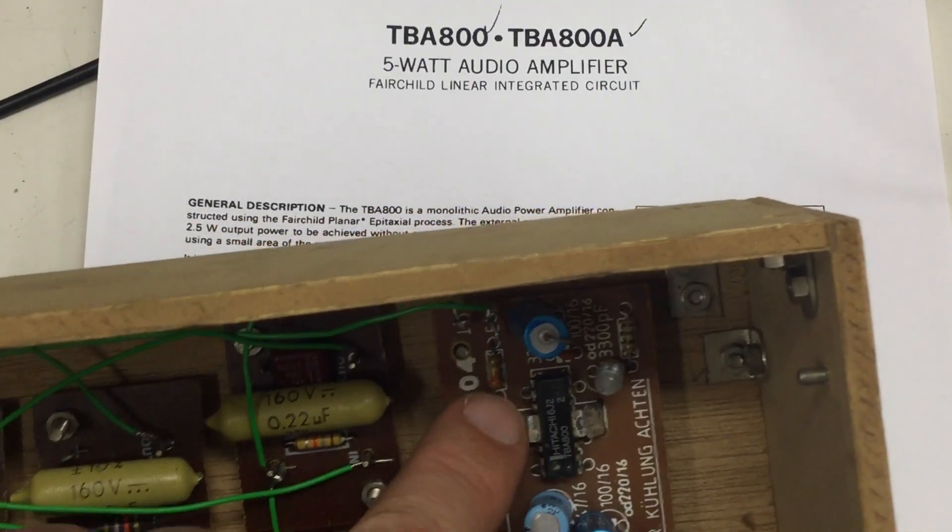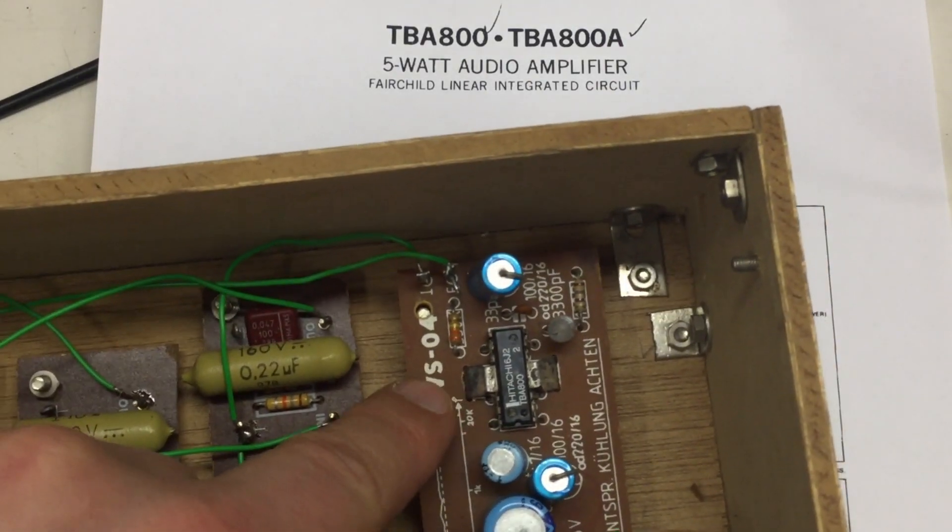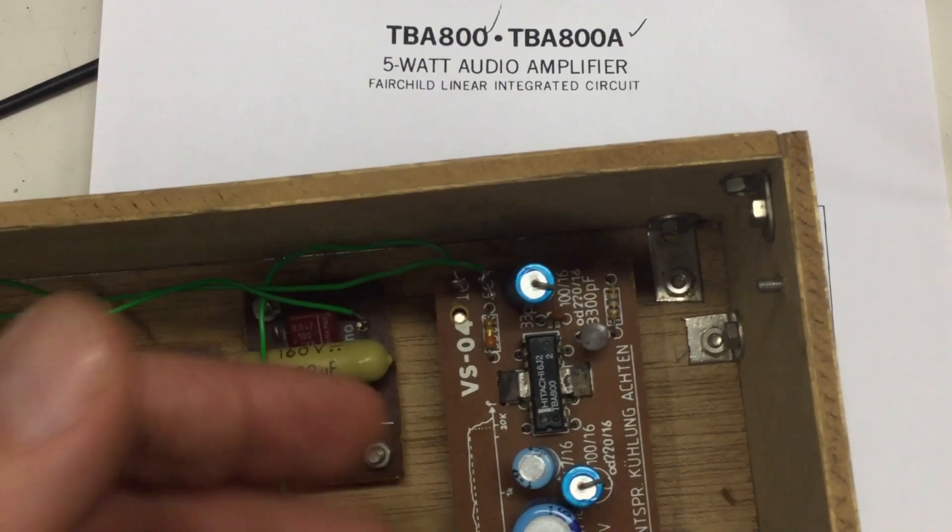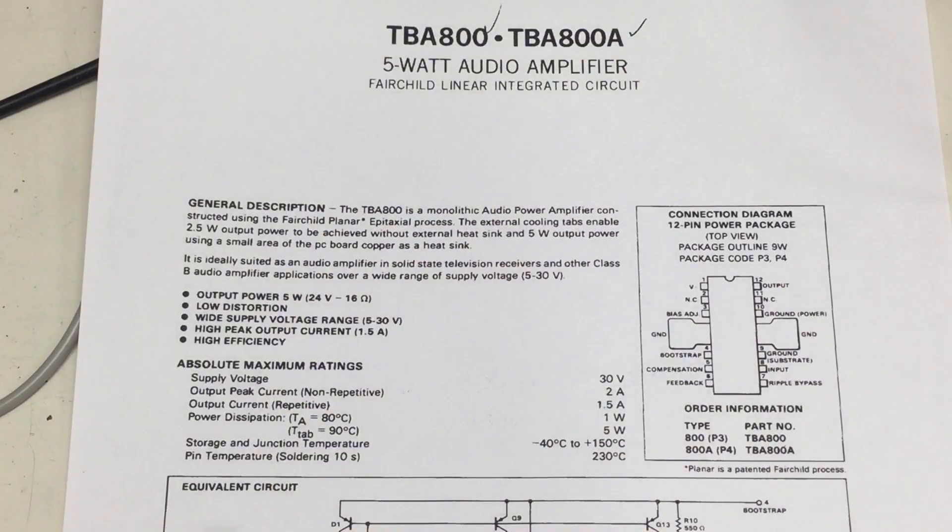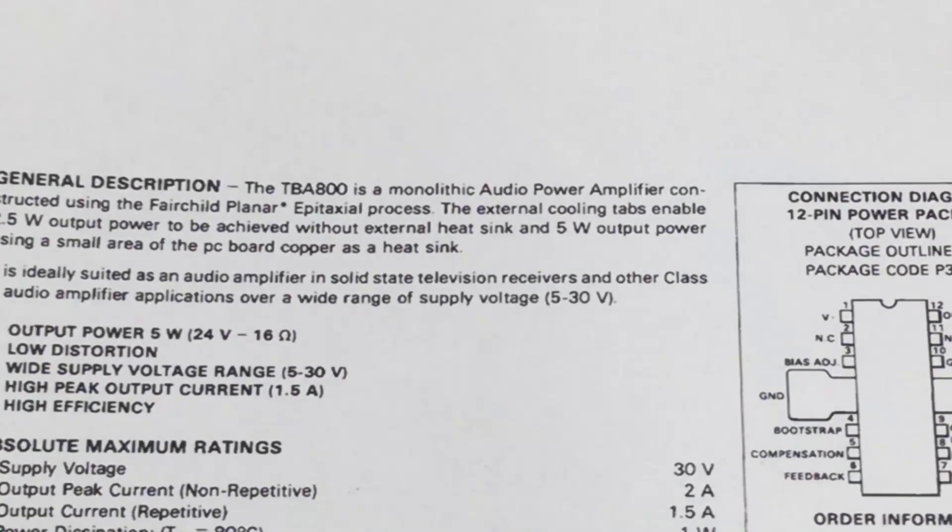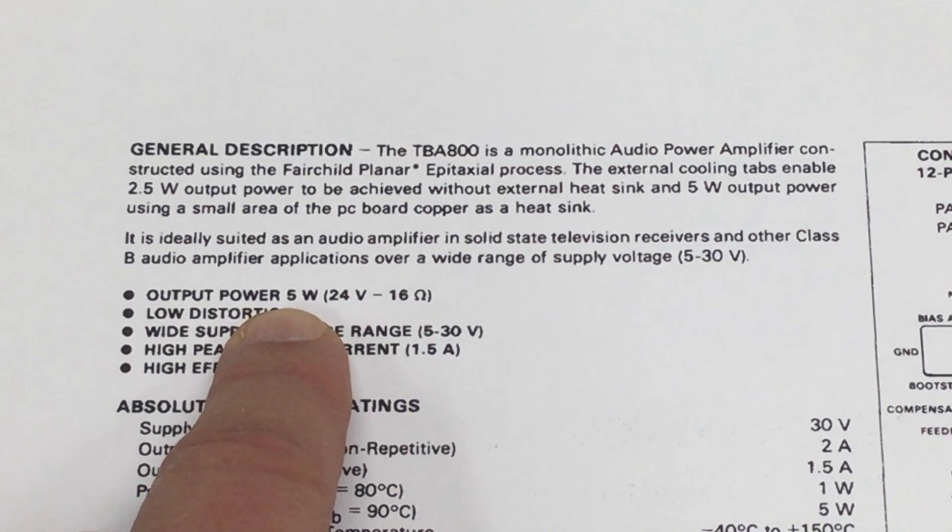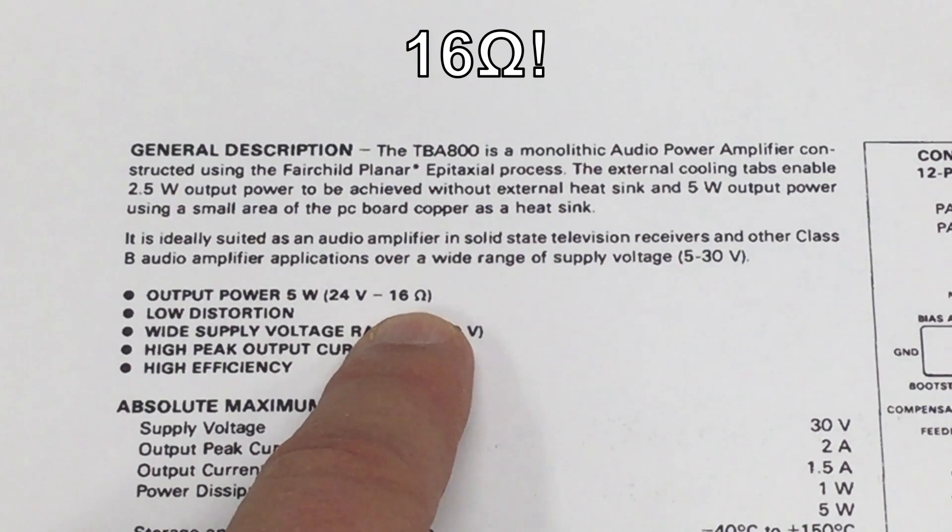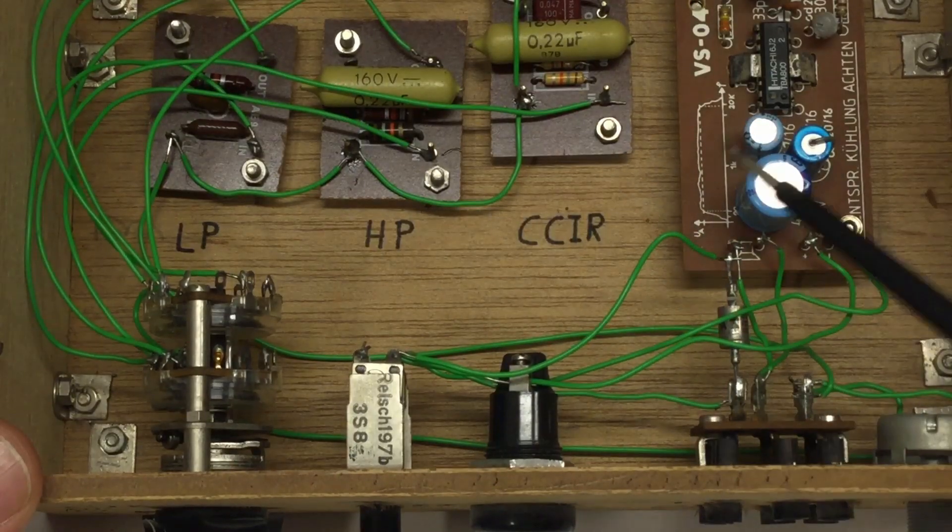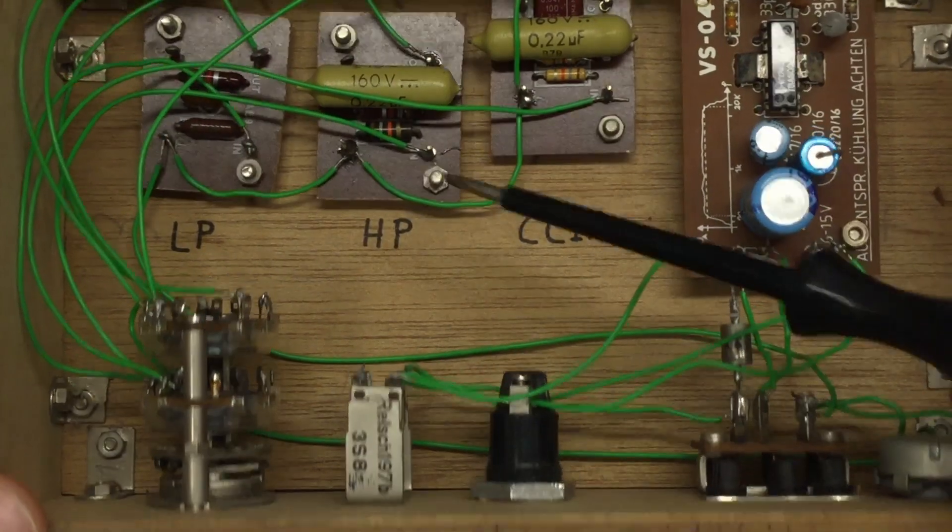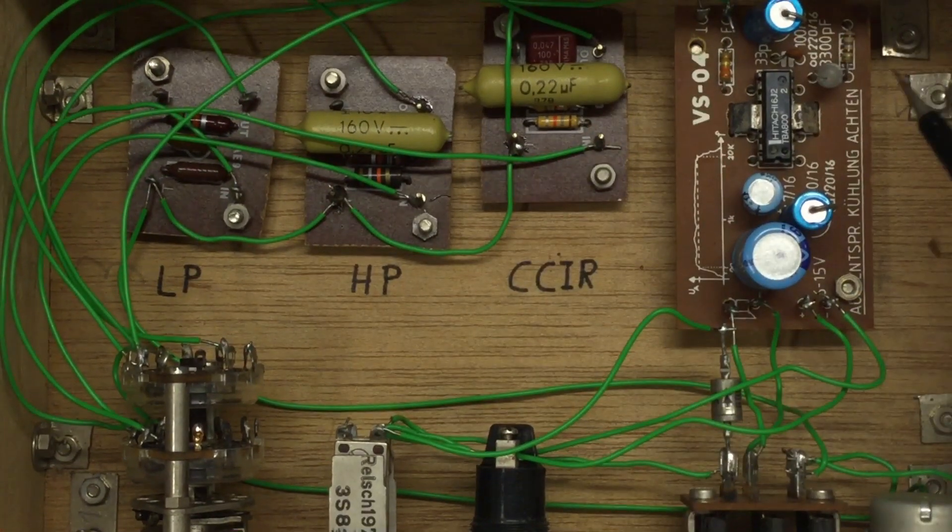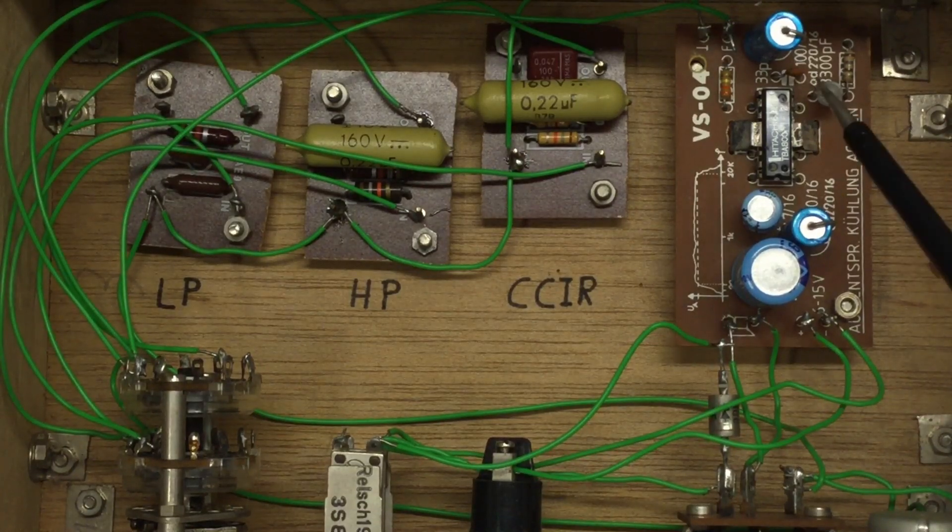That's the audio amplifier, the TBA 800. That thing here, the TBA 800A, the ears are not soldered down for cooling but they are standing free so you can attach your own heatsink if you want the maximum power out of that thing, which is I guess five watts at a 24 volt power supply and a 16 ohm speaker.